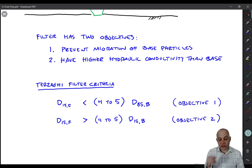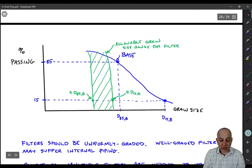So now we're comparing D15s of the two materials and saying the filter has to be adequately coarser than the base in order to actually drain water away from it. So these two criteria basically provide us with a range in which we can design a grain size distribution in a filter for a given base grain size distribution curve.